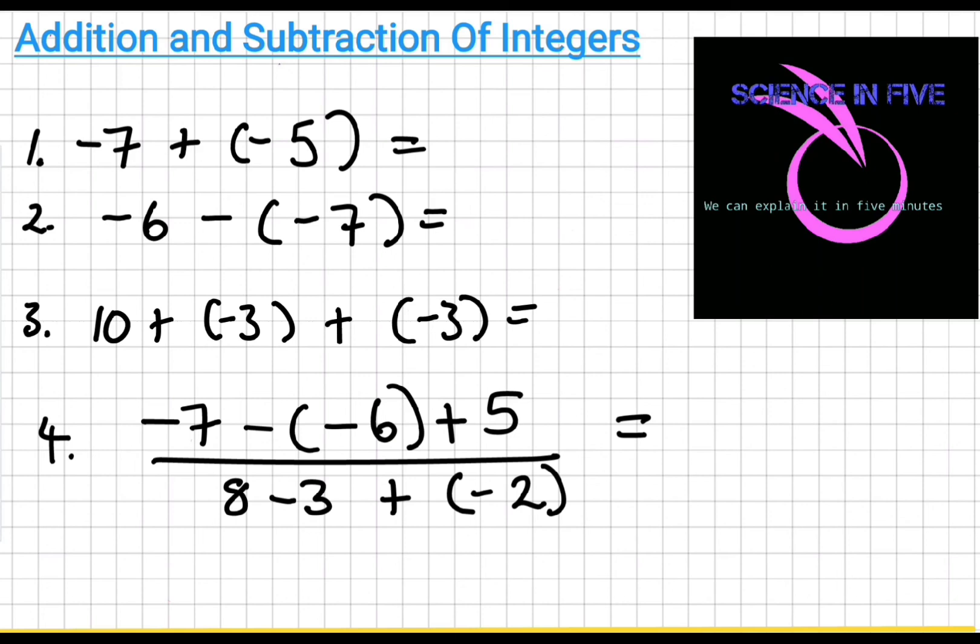Okay, let's go. Number one, minus seven plus minus five. Well, we say convert addition sign to a negative. This is minus seven minus five. Move five steps back from minus seven. You end up with minus twelve.